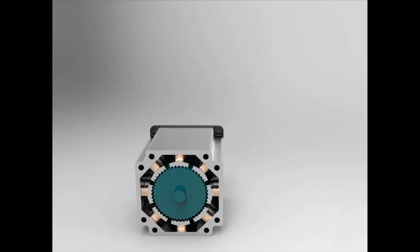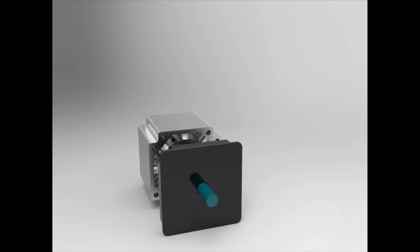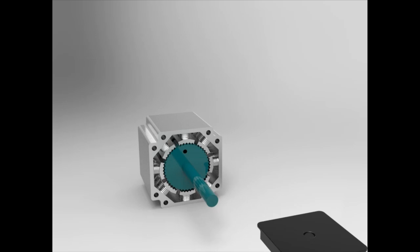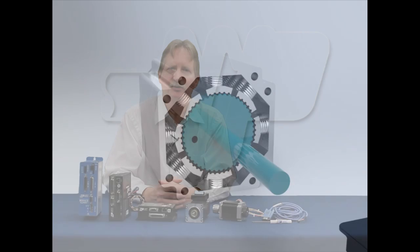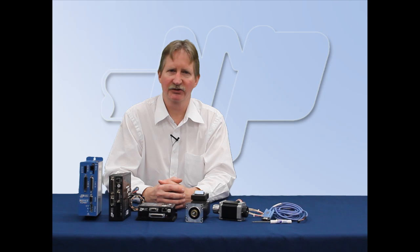Welcome to our encoder features video where we explain the benefits of adding encoder feedback to a step motor system. Step motors are popular because they are low-cost and easy to use, but experienced users know that the first time you violate the laws of physics, the motor stalls without warning. By adding an inexpensive encoder, the system can operate closed-loop avoiding traditional limitations.